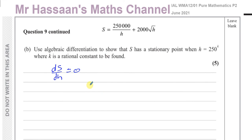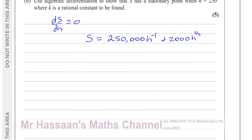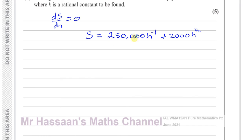To differentiate, we need all variables in the numerator in index form. So 1 over H becomes H to the power of negative 1, and the square root of H becomes H to the power of one half. Once everything is written in index form, we can then differentiate.